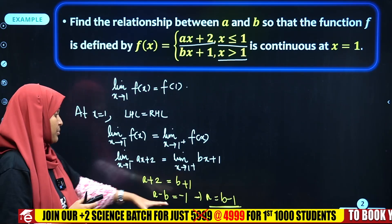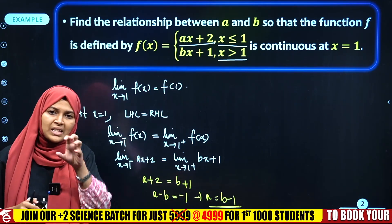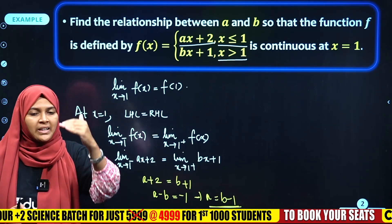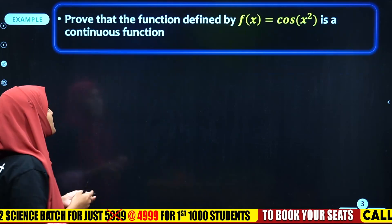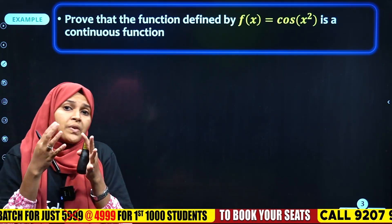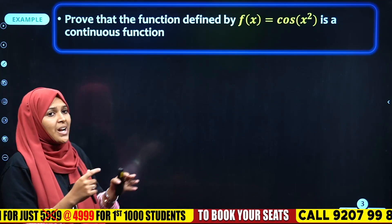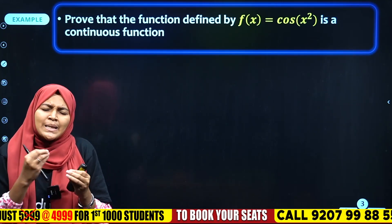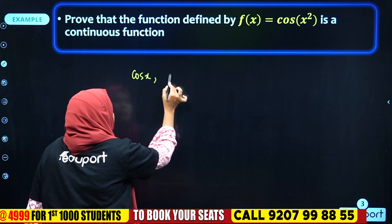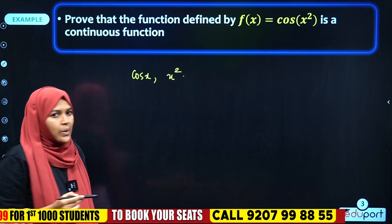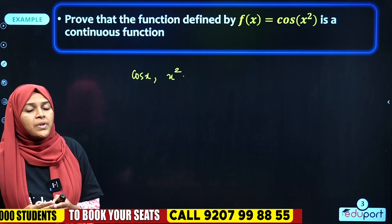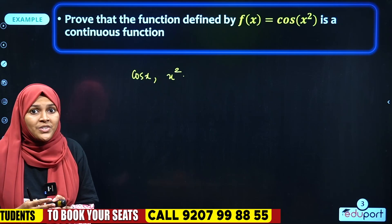We find A and B — their relationship is given by this equation. So LHL = RHL at the point gives us the answer. The next question is 1 mark: f(x) = cos(x²). We need to prove it is a continuous function. Cos(x²) is the composition of cos(x) and x², which are trigonometric and polynomial functions respectively.